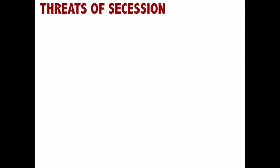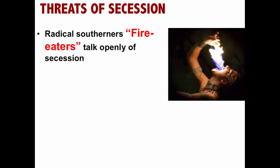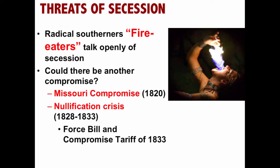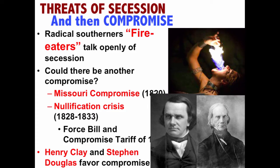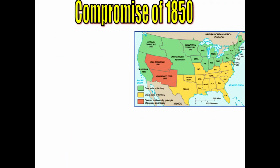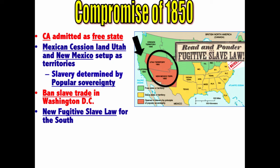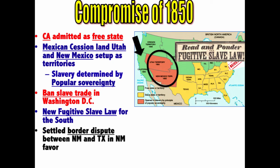There were threats of secession over California trying to enter the Union. Radical Southerners, known as Fire Eaters, talked openly of secession. Henry Clay and Stephen Douglas favored trying to compromise over the California issue. The Compromise of 1850 calmed most of the sectional tension caused by the fallout of the Mexican-American War. California was admitted as a free state; Mexican cession land in Utah and New Mexico would be set up as territories where popular sovereignty would decide the future of slavery; the slave trade would be banned in Washington D.C.; a new, tougher Fugitive Slave Law would be passed; and there would be border adjustments between New Mexico and Texas.